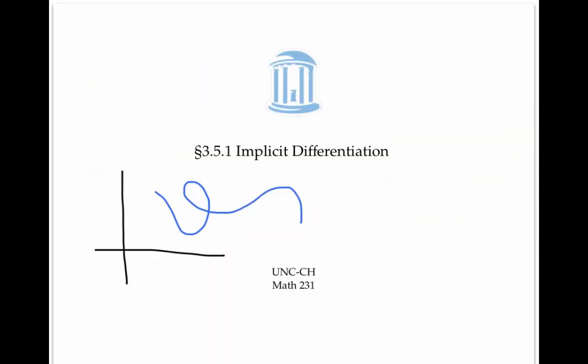This video talked about using implicit differentiation to find the slopes of tangent lines for curves defined implicitly. The main two steps were first to take the derivative of both sides with respect to x, and then to solve for dy/dx.